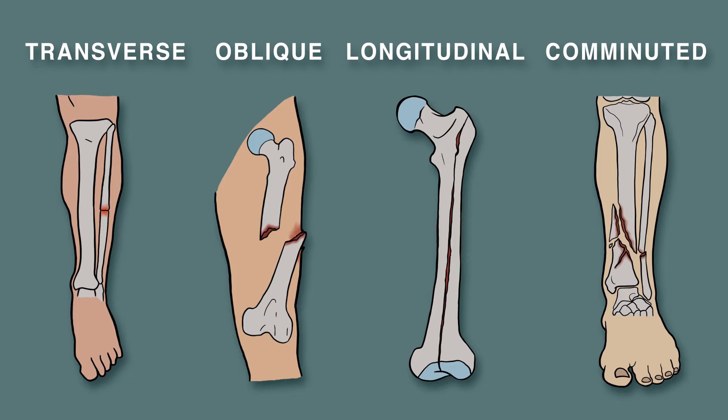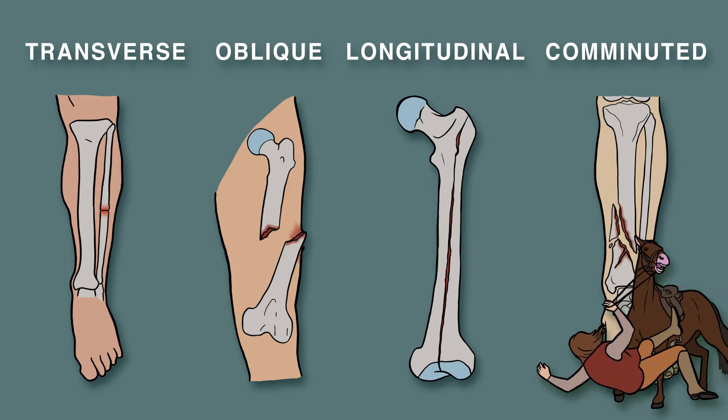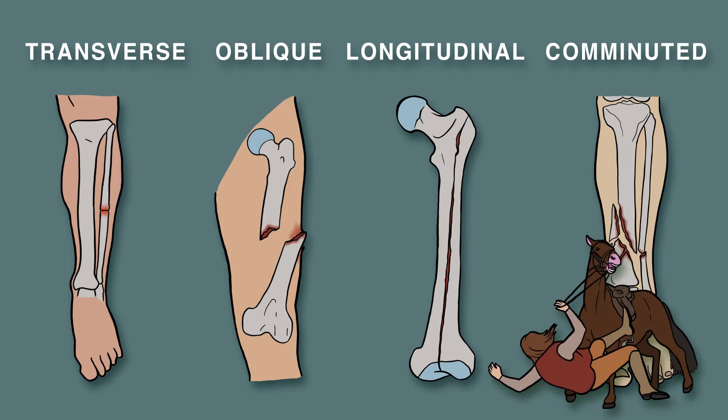A transverse fracture is one in which the break is straight across the bone, perpendicular to its long axis. An oblique fracture is one where the break is diagonal. A longitudinal fracture is one where the break is along the bone's long axis. A comminuted fracture is one in which the bone breaks into more than two pieces, and typically occurs due to a severe accident.